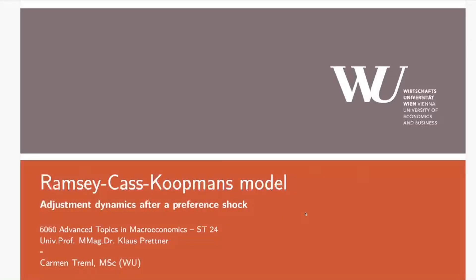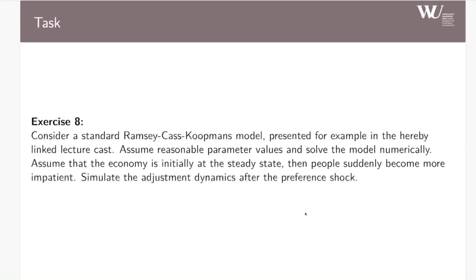Hi and welcome to this short introductory video on the Ramsey-Cass-Koopmans model. According to the task, consider a standard Ramsey-Cass-Koopmans model presented for example in several lecture casts. I will link the one by Mr. Pretner down below and also in the slides. Assume reasonable parameter values and then solve the model numerically. Assume that the economy is initially at the steady state, then people suddenly become more impatient. Simulate the adjustment dynamics after the preference shock.